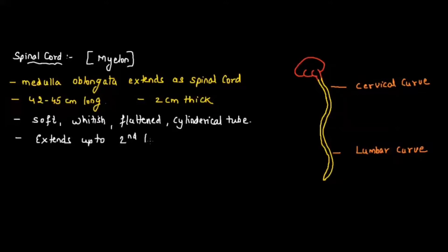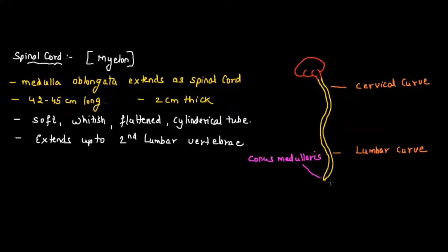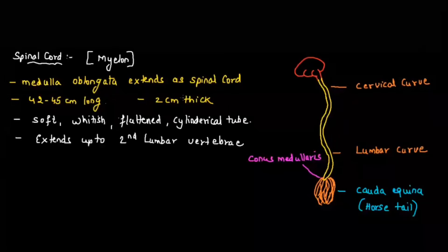The spinal cord is a soft, whitish, flattened cylindrical tube that extends up to the second lumbar vertebra. The end of the spinal cord is known as the conus medullaris, and this conus medullaris gives rise to a huge number of nerves. These nerves appear like a horse tail, and this structure is called cauda equina — 'cauda' means tail and 'equina' means horse.